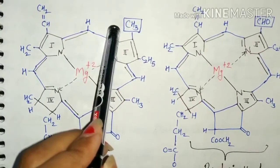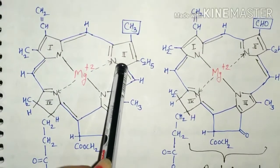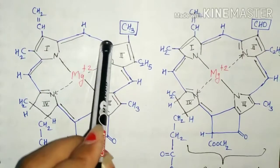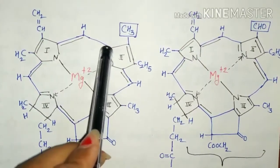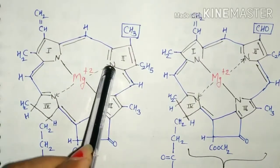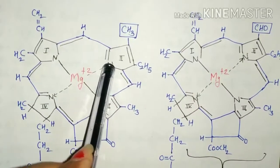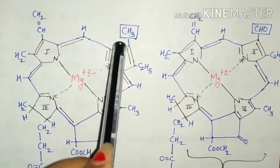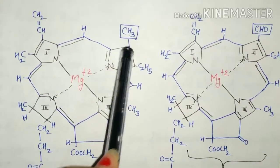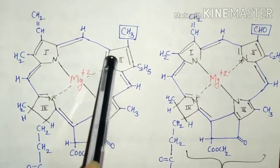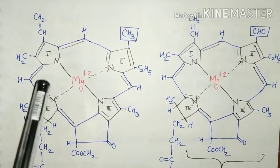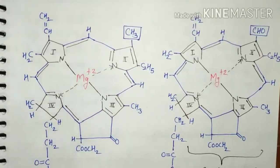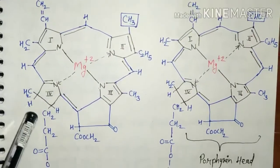A methyl group is present at the third position of the second pyrrole ring in chlorophyll A. The pyrrole ring consists of four carbons and one nitrogen, and the third carbon position is where the methyl group binds in chlorophyll A. The upper portion containing the four pyrrole rings is called the porphyrin head region, and from the fourth pyrrole ring extends a long hydrocarbon chain as the phytol chain.